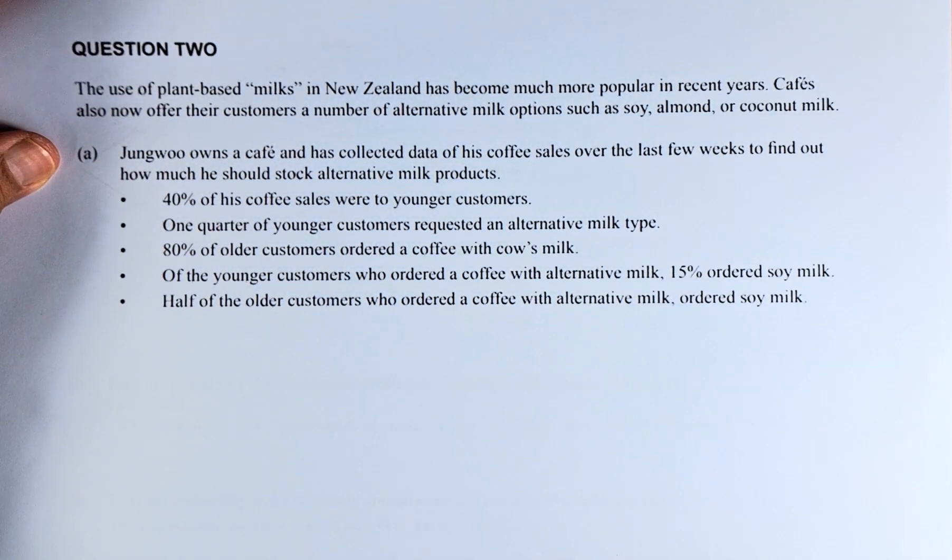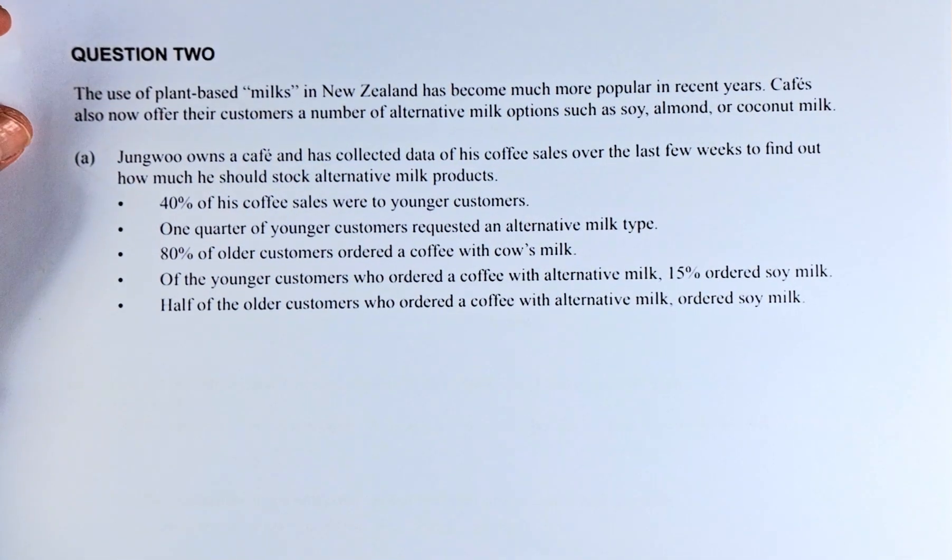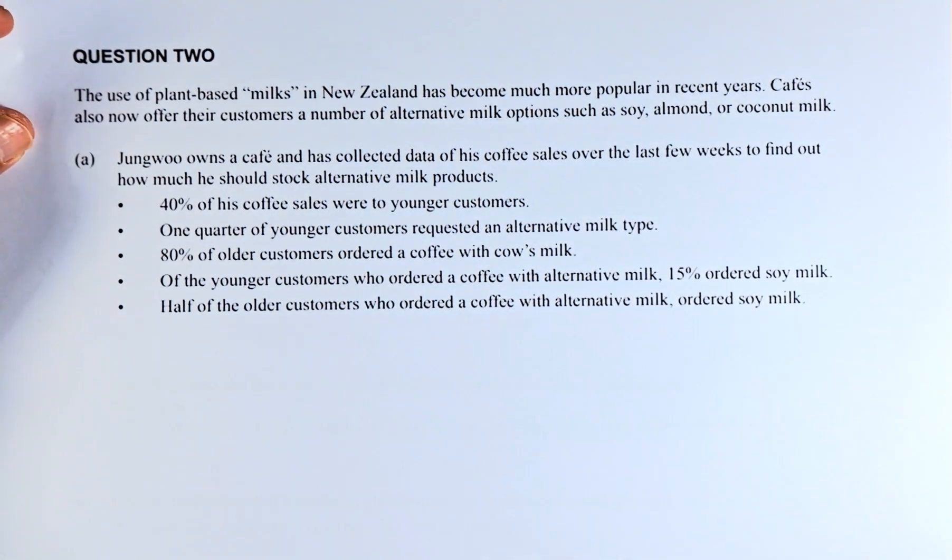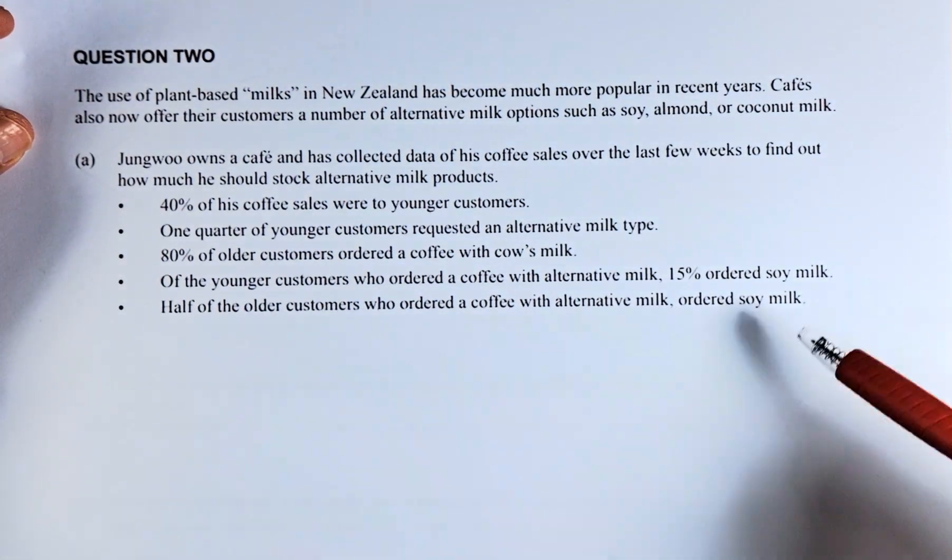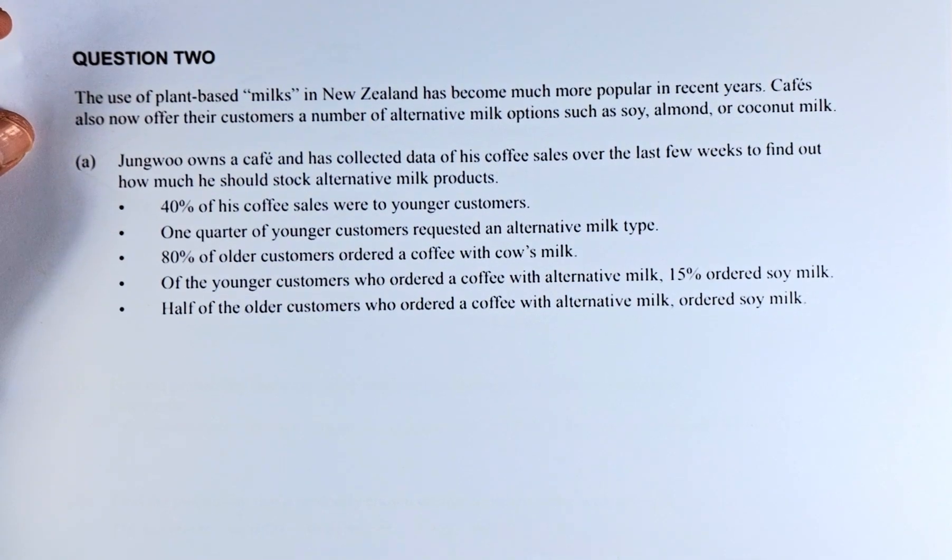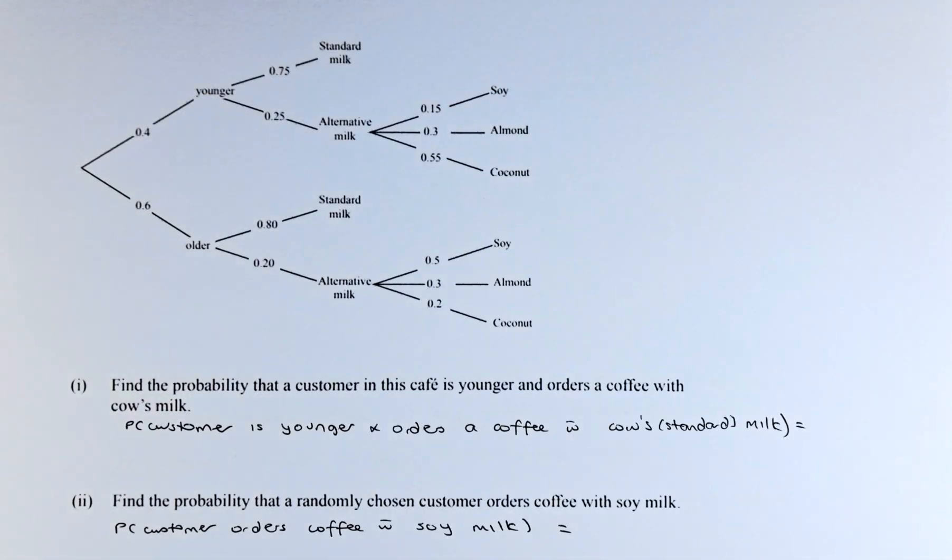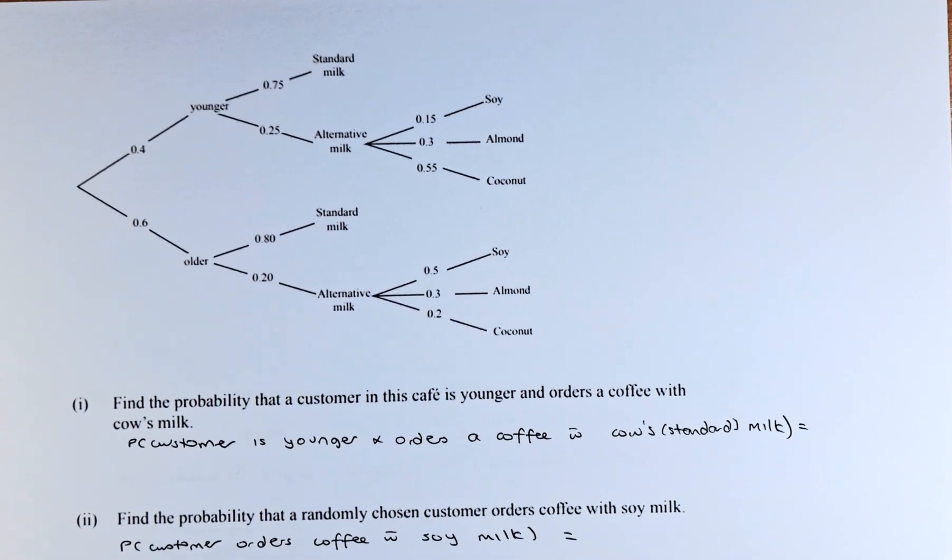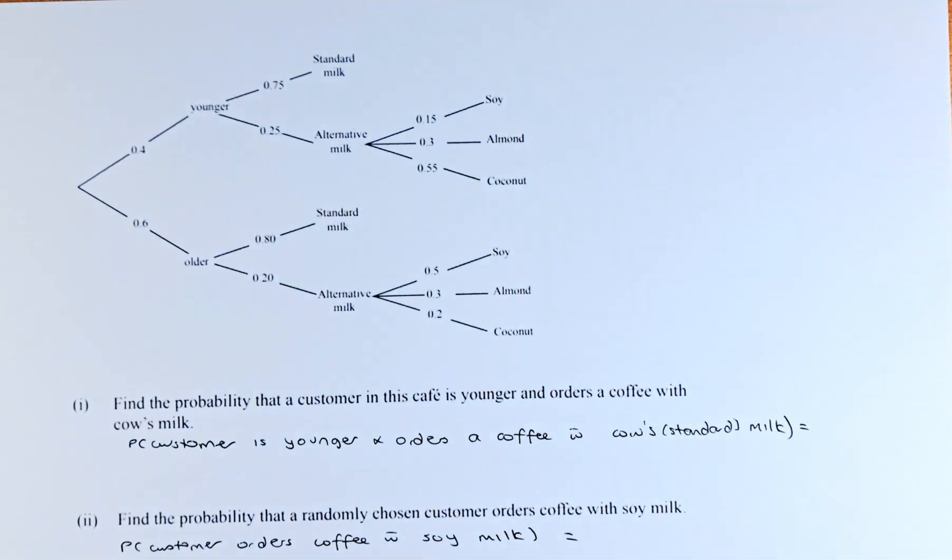So if you know this question, this is going to be a probability question and we are going to represent all the info here in the probability tree. Remember, cow's milk is also called the standard milk in this question. All the information can be represented by this probability tree. So once we have done the probability tree, we are now able to calculate the probability.